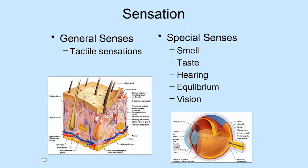The first of these is what's known as general sensation, or general senses. This is our body's ability to pick up tactile sensations — things that you feel with the skin, such as touch, changes in temperature, pressure, and vibration. These are things picked up by receptors in the skin.